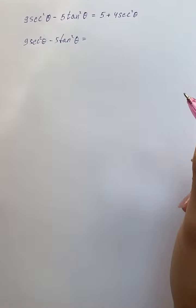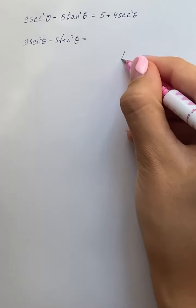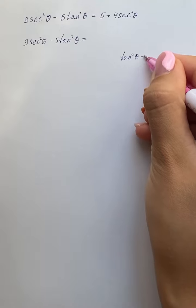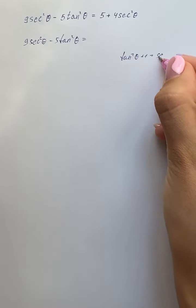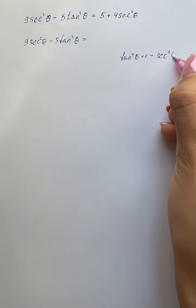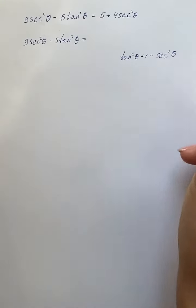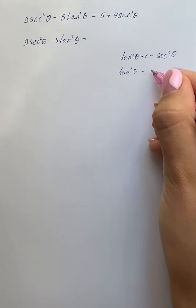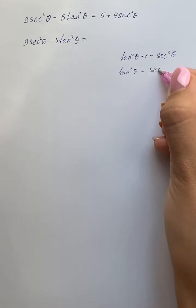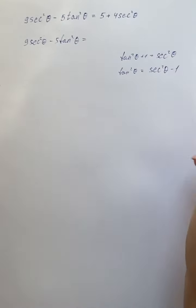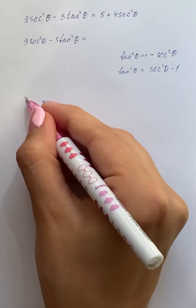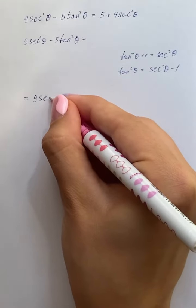Here we're going to use the identity tangent squared theta plus 1 equals secant squared theta, so tangent squared theta equals secant squared theta minus 1.